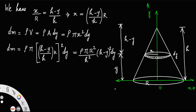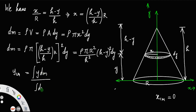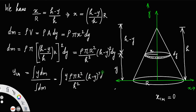Since the solid cone is symmetric about the y axis, x_cm will definitely be 0 — you do not need to find x_cm. But for y_cm, you have to use the formula: y_cm equals the integral of y dm divided by the integral of dm. So the numerator is the integral of y times ρπr²/h² times (h minus y)² dy.